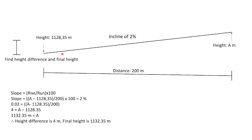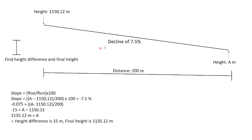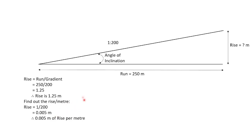You can also calculate for different chainages in between. A decline is when you go from a higher point to a lower point over a distance — the same formula applies: slope = rise / run × 100. Follow the algebra steps and you'll get your slope. When working with gradient or inclination, for example a gradient of 1 to 200 with a 250 metre run, it becomes 250 / 200, giving a rise of 1.25 metres. Alternatively, 1 to 200 equals 0.005 metres per metre, which you then use to work out your different chainages.